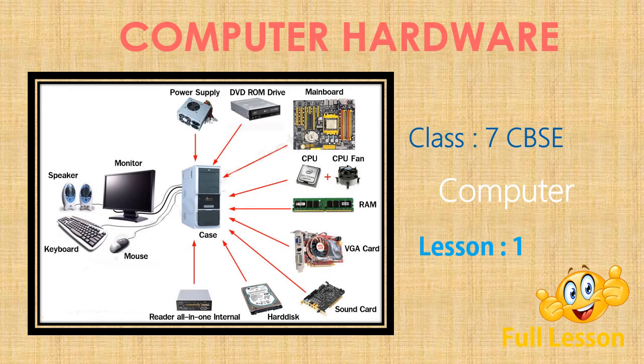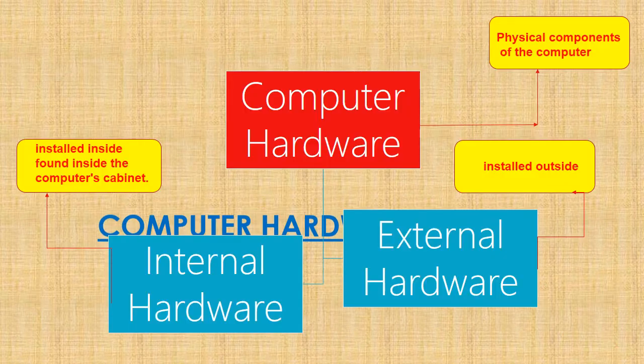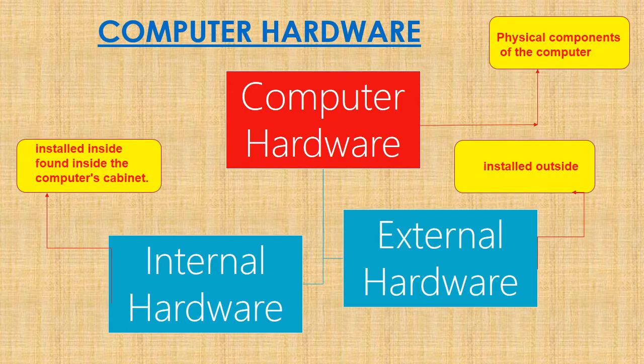In this video we are going to learn about computer hardware. This is for Class 7 CBC, Lesson 1. Computer hardware is of two types: internal hardware and external hardware. The hardware devices which are installed inside the computer are called internal hardware, and external hardware means the components installed externally, that is outside of the system.